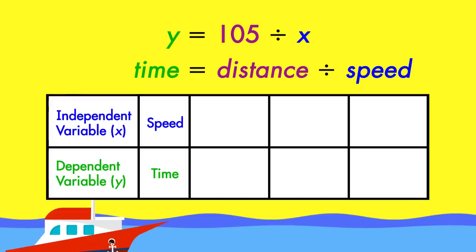Let's find out how long it will take the boat to go 105 miles if it travels at three different speeds: 15, 20, and 30 miles per hour. Using the equation, we'll solve for three different values of Y.